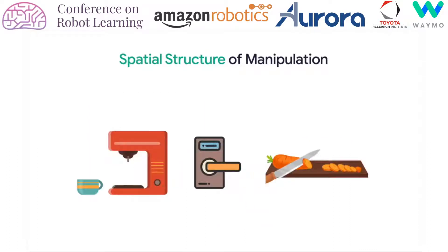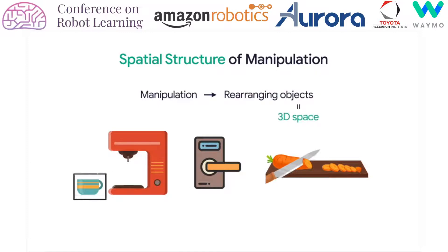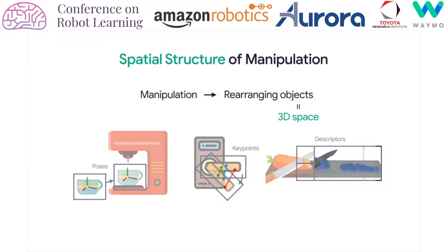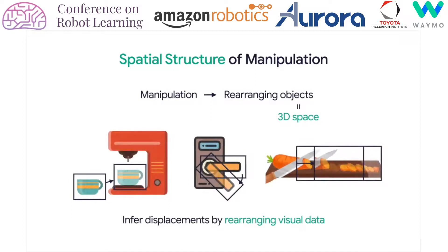In this work, we consider the spatial structure of the manipulation problem. Manipulation often involves rearranging objects, which can be thought of as rearranging a chunk of 3D space — for example, placing a mug under a coffee machine, turning a doorknob, or pushing a pile of objects. Previously, roboticists have relied on object-centric representations to describe these spatial displacements, but in this work we propose to infer these displacements without any assumptions of objectness, by directly rearranging visual data.